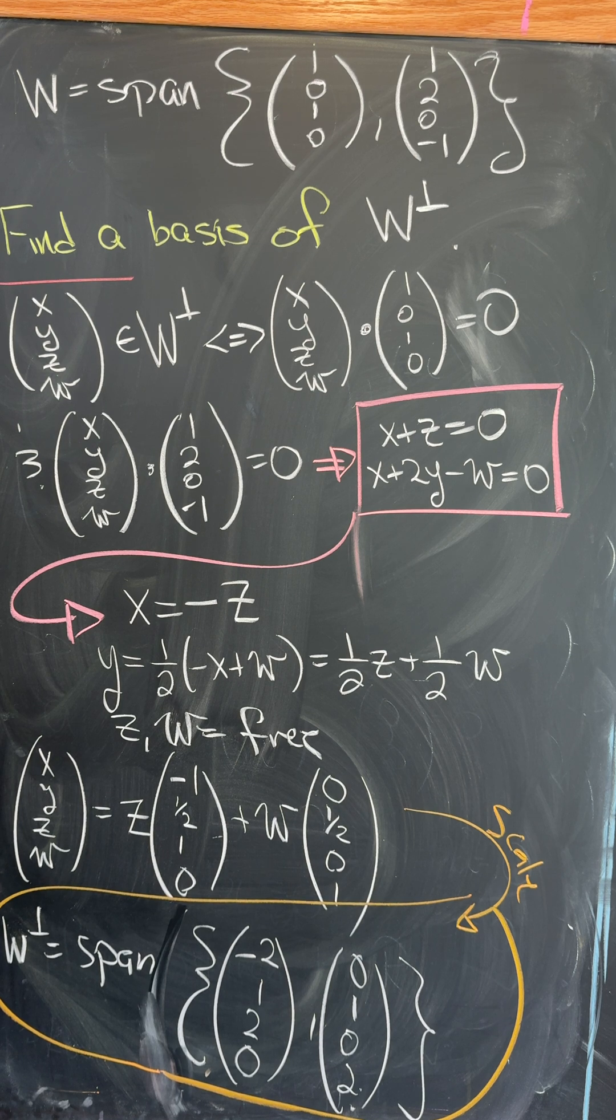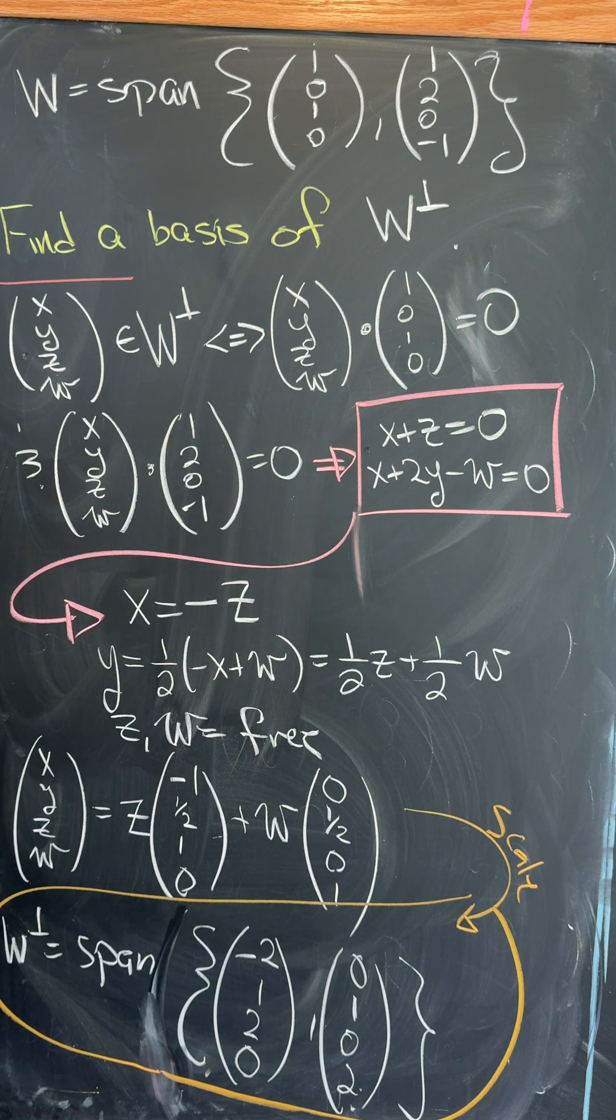We want to find a basis of the orthogonal complement to W. Something's in the orthogonal complement to W if and only if the dot product with each of W's basis elements equals 0. That gets us to the system of equations: X + Z = 0, X + 2Y - W = 0.